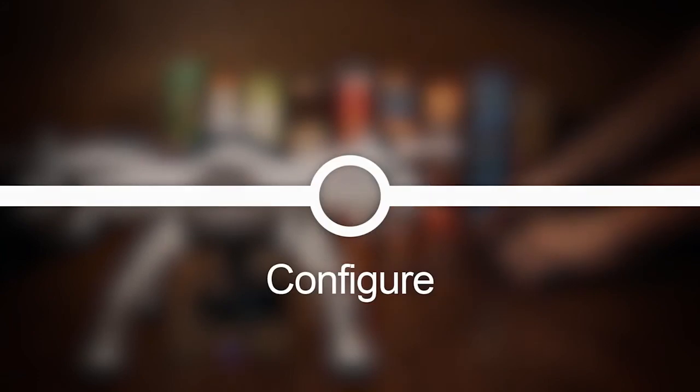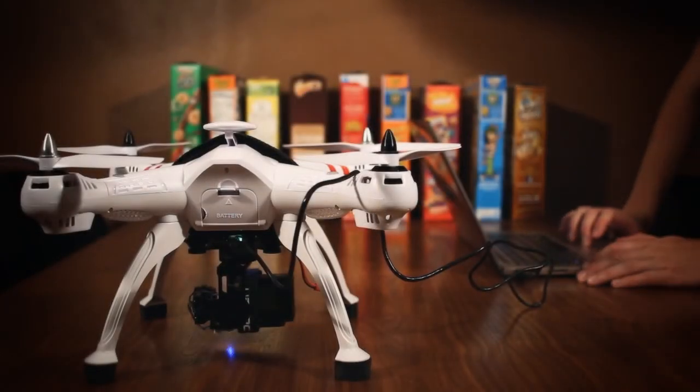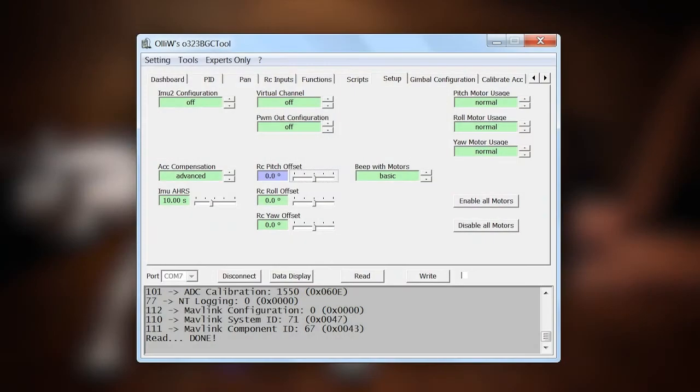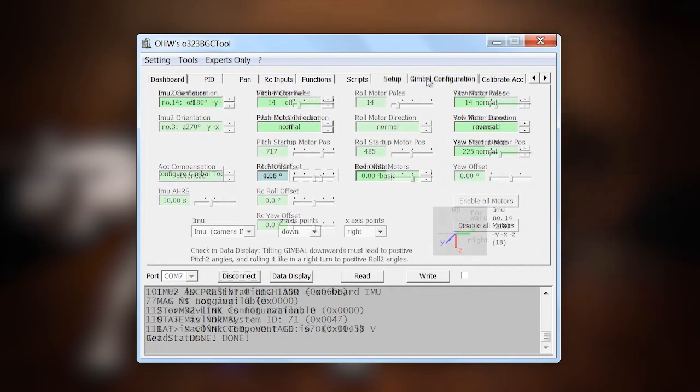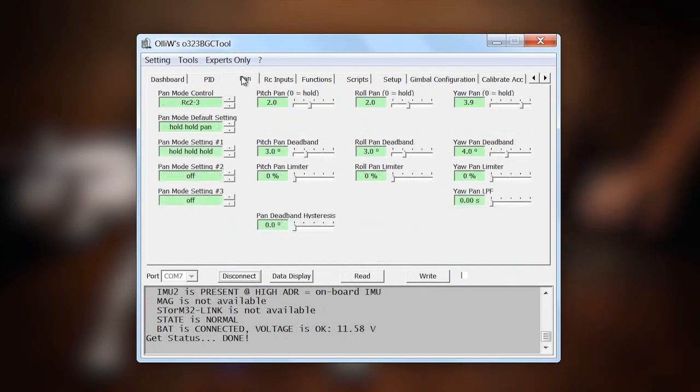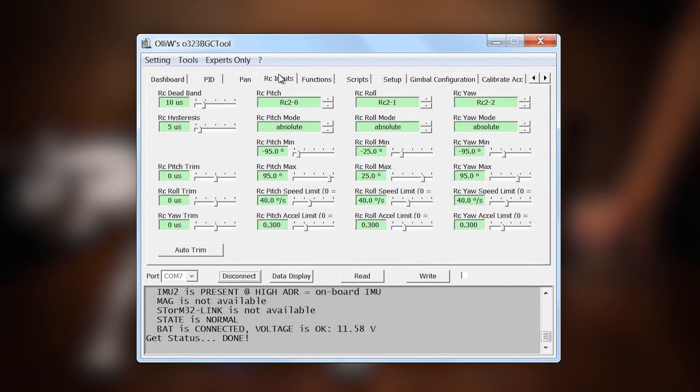As for configuration, I'd heard these gimbals tend to come pretty well pre-configured for GoPro-type cameras, but still connected to the gimbal controller using the companion software as I wanted the camera to tilt slightly downwards instead of straight ahead. For now, I left all of the hundreds of other options and parameters of the firmware unchanged.